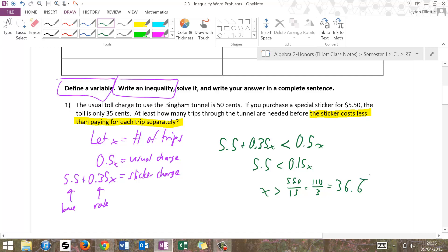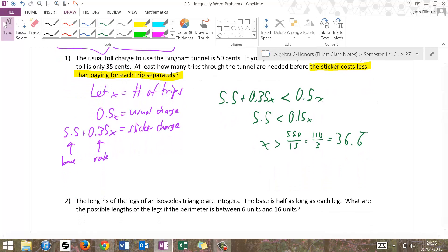Now that's not a trip, but it says if x is greater than that many trips, and how many trips through the tunnel, well, as soon as you hit 36.6 trips, your sticker costs less than paying for each trip separately. So what we want to do is actually increase that and say, well, that means that at least 37 trips are needed. And that's the end of the first one.